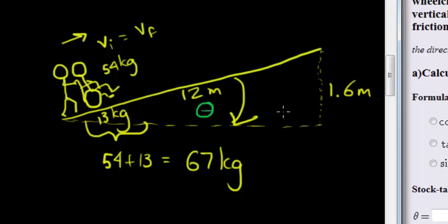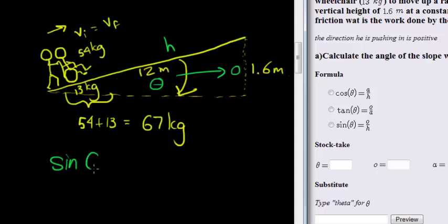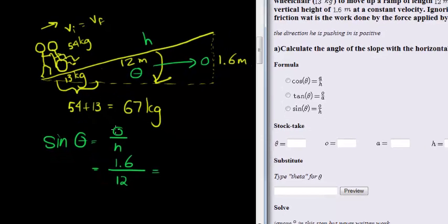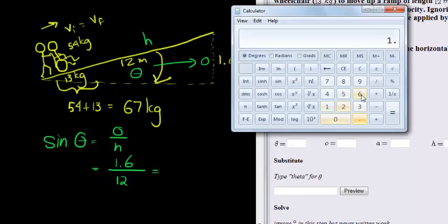Because we want theta, we have our opposite, we have our hypotenuse, which means that we want to be working with sine. Sine of theta is equal to the opposite over the hypotenuse. We know the opposite is 1.6, we know our hypotenuse is 12, which means if we take 1.6 divided by 12, we get 0.1333.